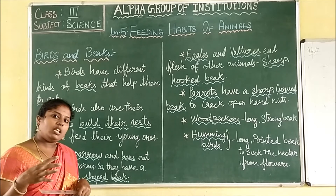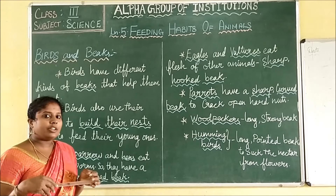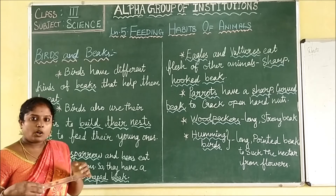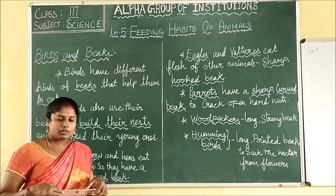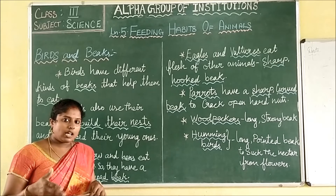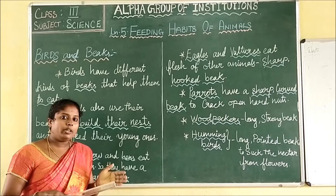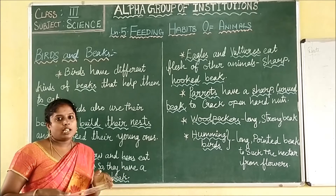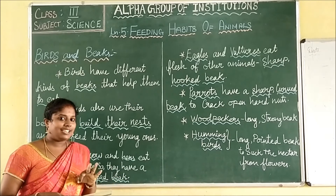Many animals eat different foods. So how are they eating? What type of food are they eating? From that, we classified and differentiated them. So how many types have we classified? We have classified them into three categories.